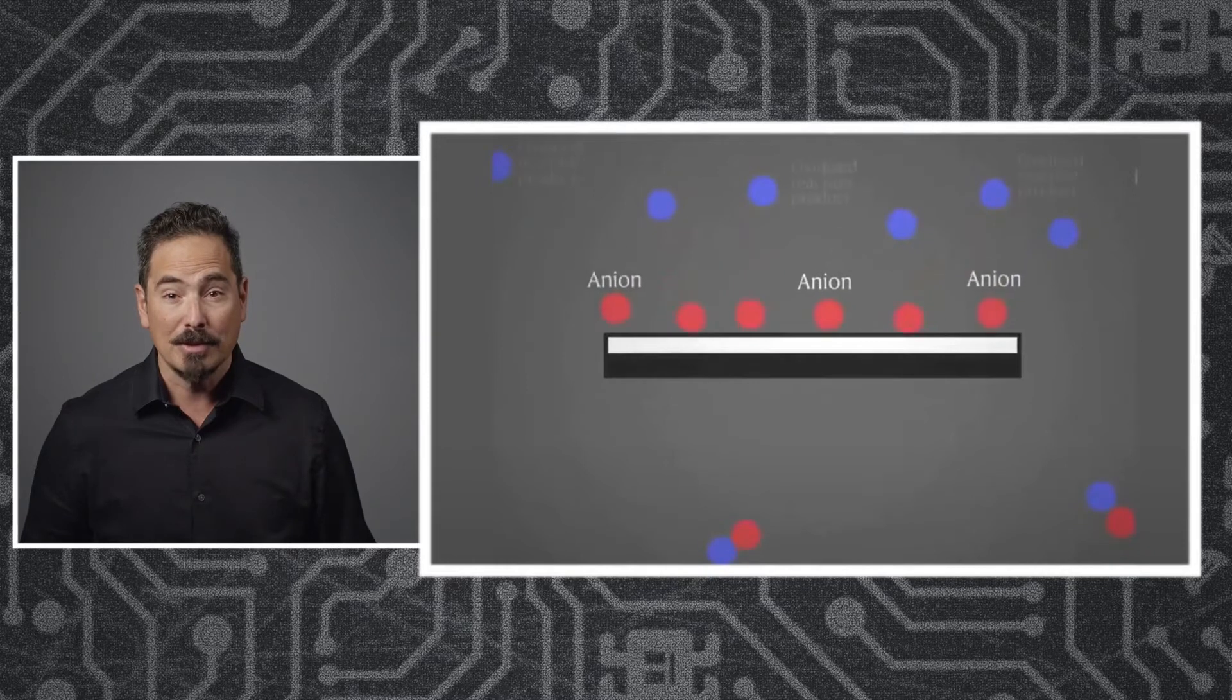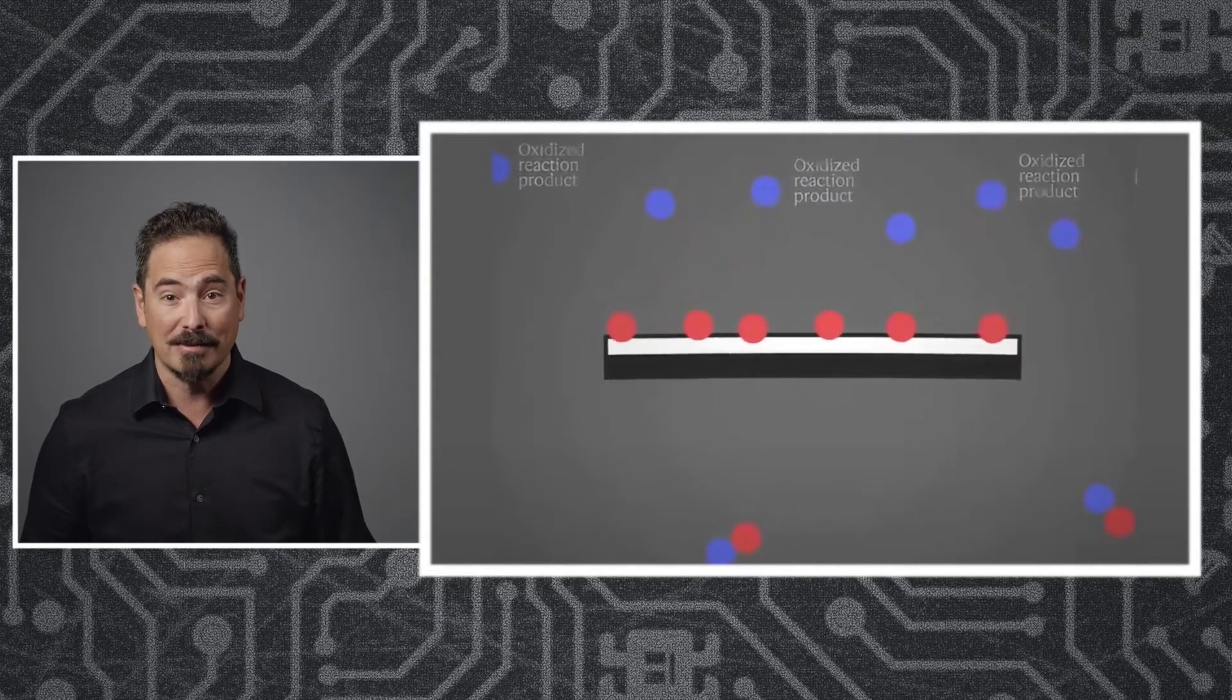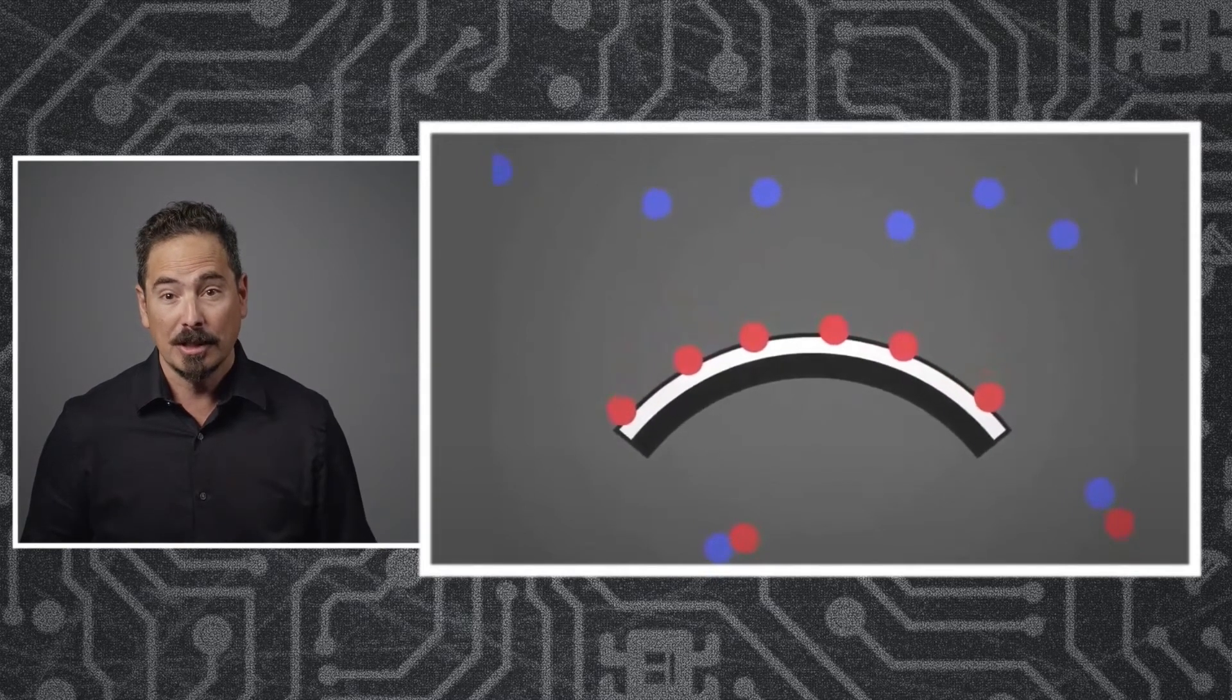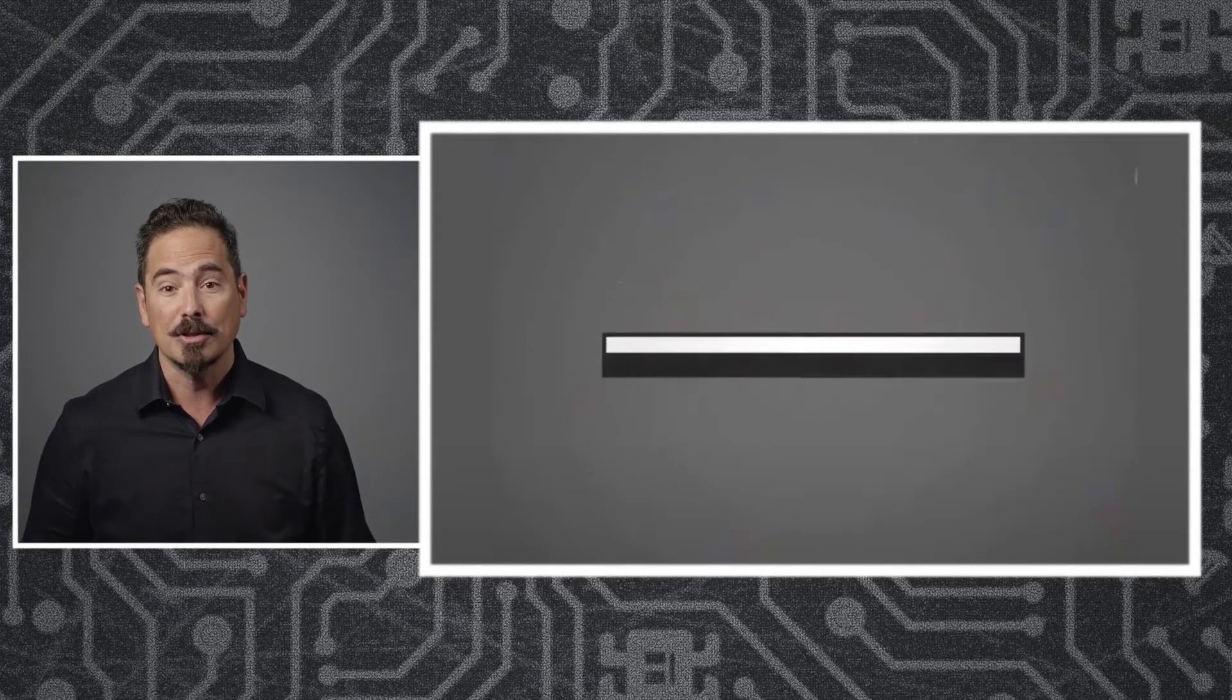When that happens, you create a stress that bends the device. If you now apply the reverse voltage, you can drive those ions away, and the device returns to itself.